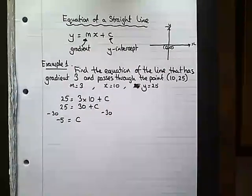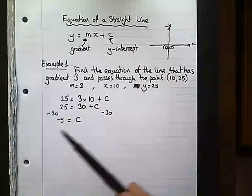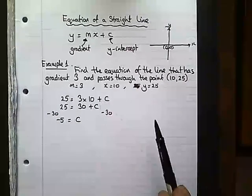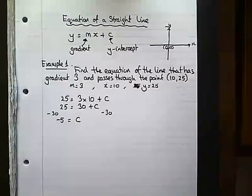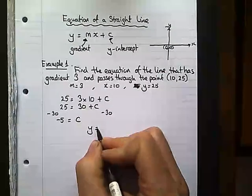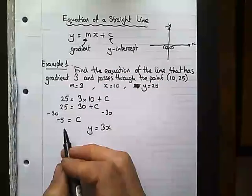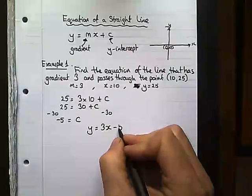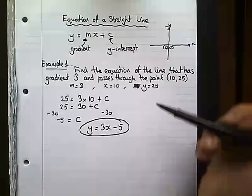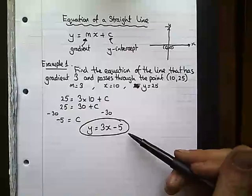Now that I have all my values, remember x and y stay as x and y because this line will have a lot of points on it. I can't just use 10 and 25, that's just one coordinate. So my equation of this line is y equals the gradient, which stays the same, so it's 3x and then my c value is minus 5. That's my general form for the equation of this line. This is the general form for the equation of a line, this specific line.